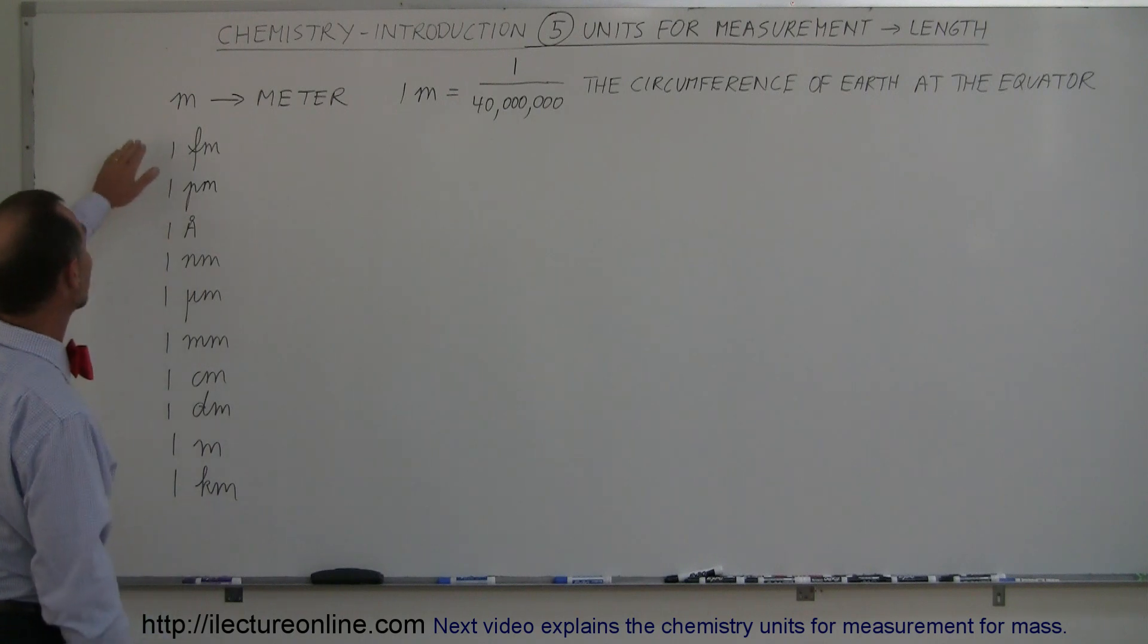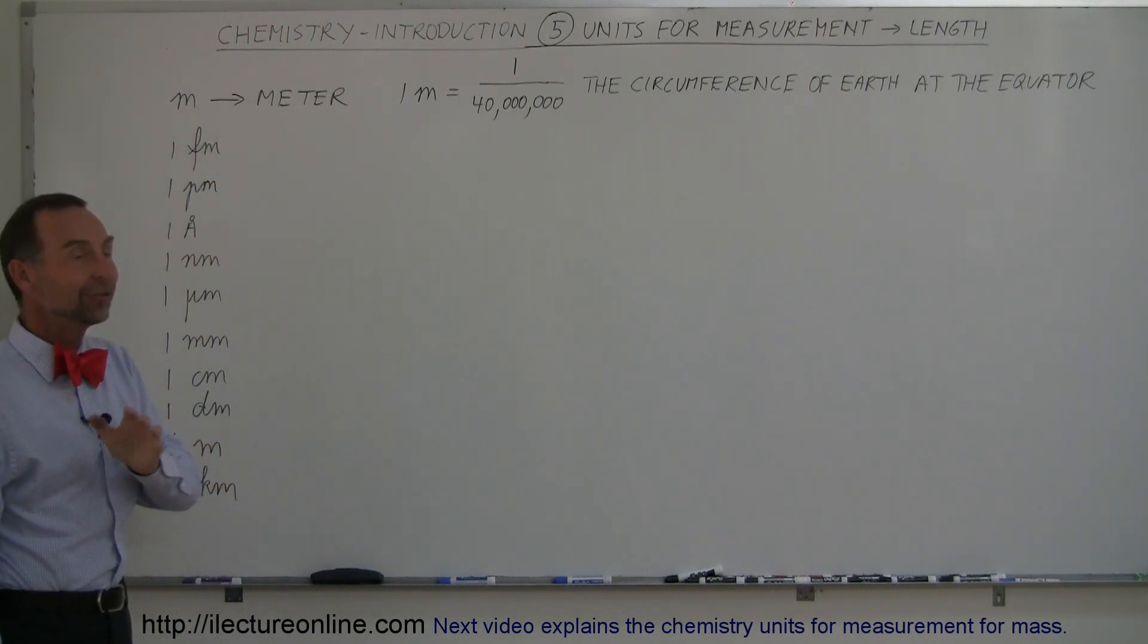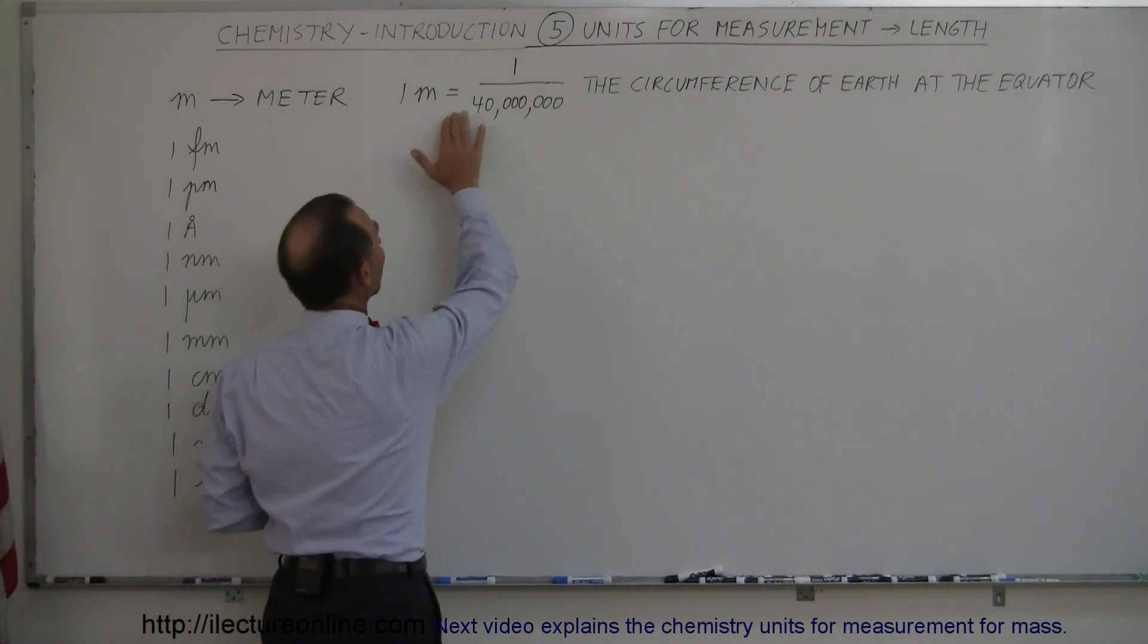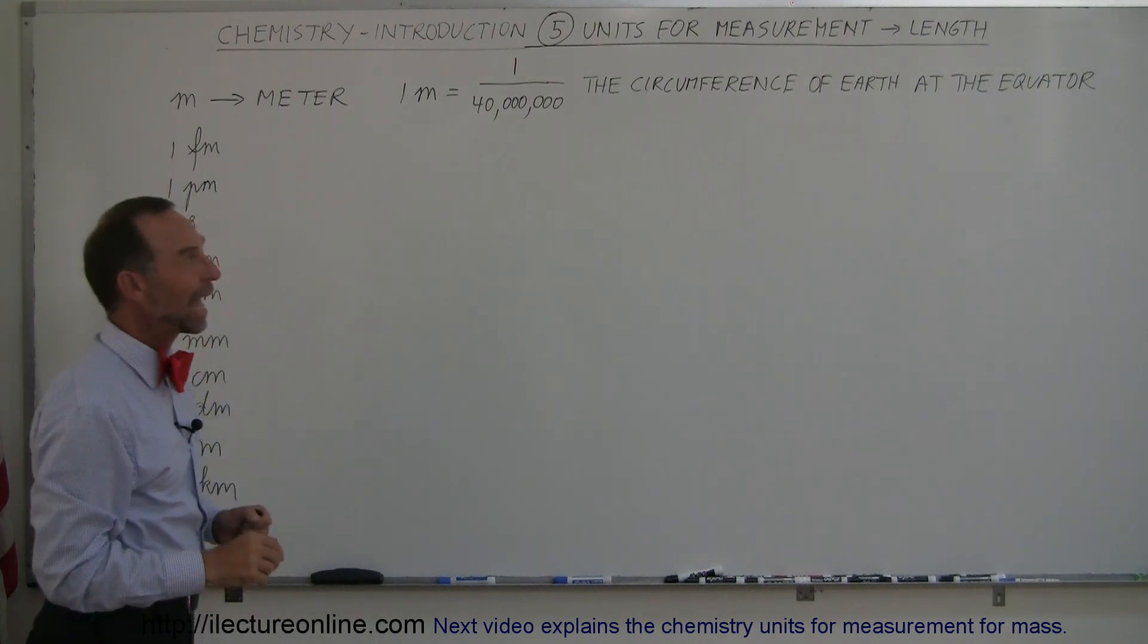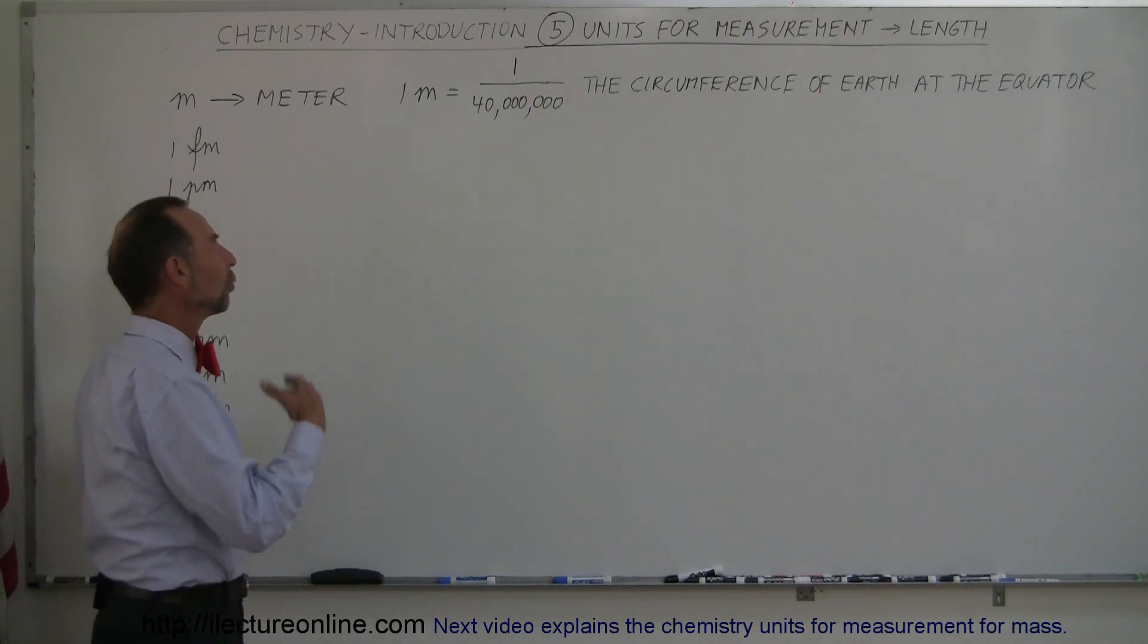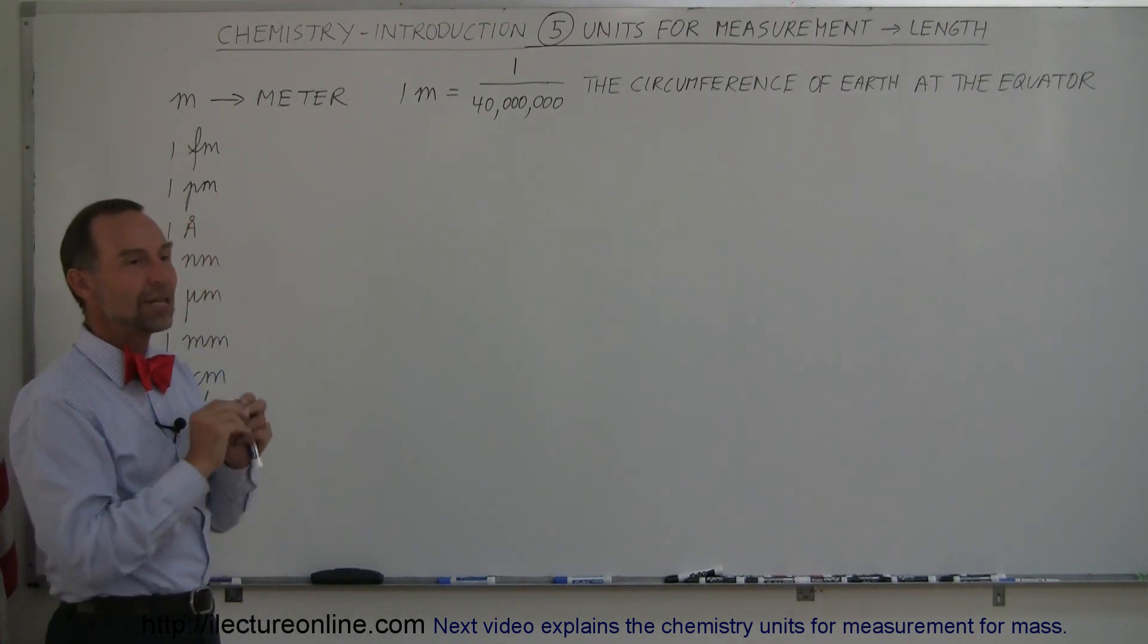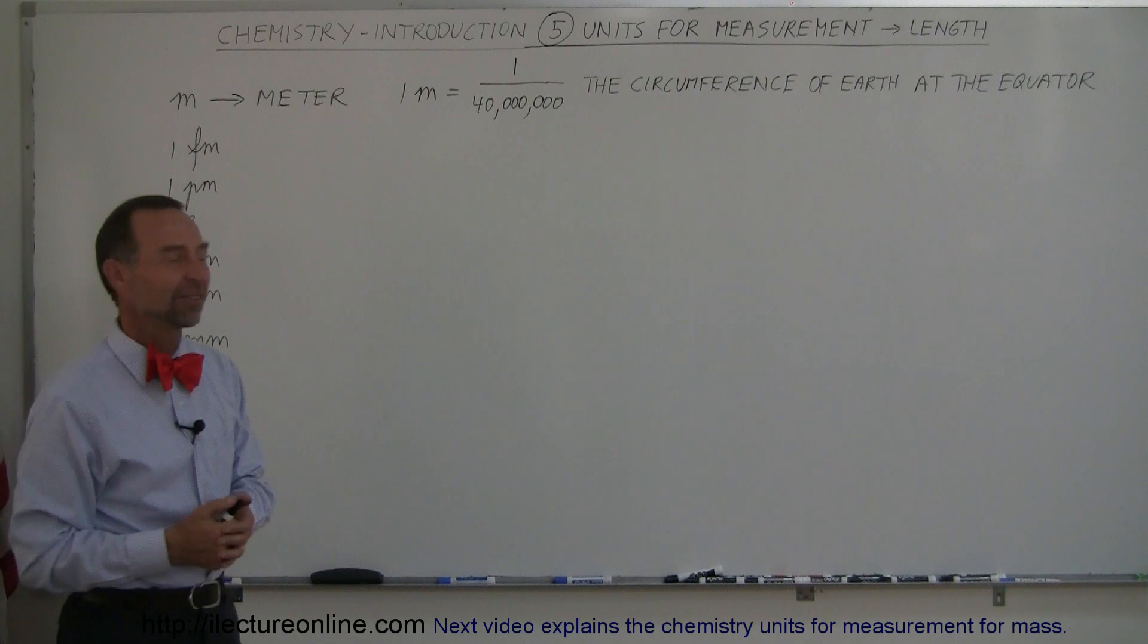The standard unit of length is the meter. We use the letter M to indicate meter. Interestingly enough, one meter is defined as 1 over 40 millionth the circumference of the Earth at the equator. Actually, they use the definition that it's 1 over 10 millionth the quarter of the circumference around the Earth at the equator, which means the same thing.